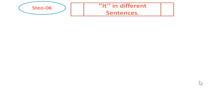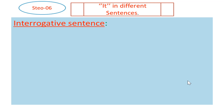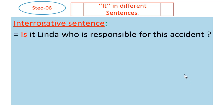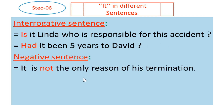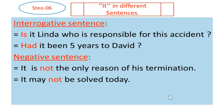Step 6 — 'it' in different types of sentences. Interrogative sentence: 'Is it Linda who is responsible for this accident?' — converting the emphatic 'it is Linda' into a question. Another interrogative example: 'Had it been 5 years to David?' For negative sentences: 'It is not the only reason for his termination.' And: 'It may not be solved today' — using 'may not' as the negative form.